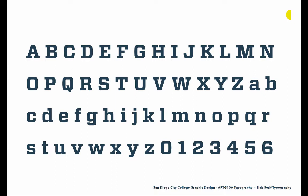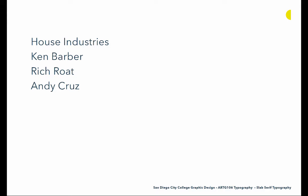Then we have Vitesse, which is a super-elliptical rounded squared style slab serif typeface — you'll notice no bracketing here. There's a technical style to it, and it was originally designed for Wired Magazine, but was retooled and released to the public later on.